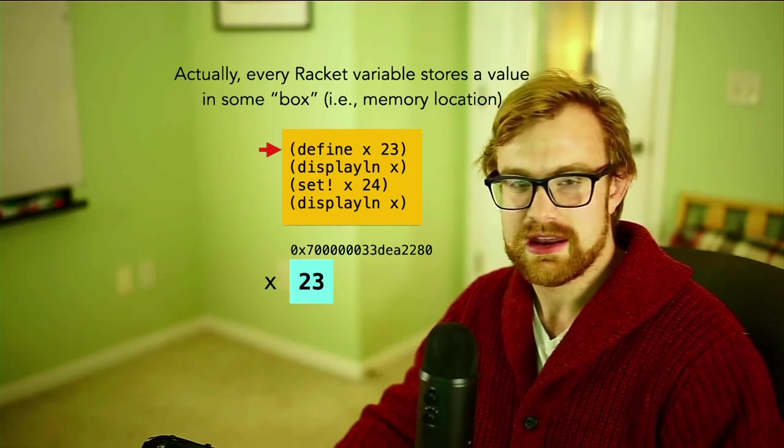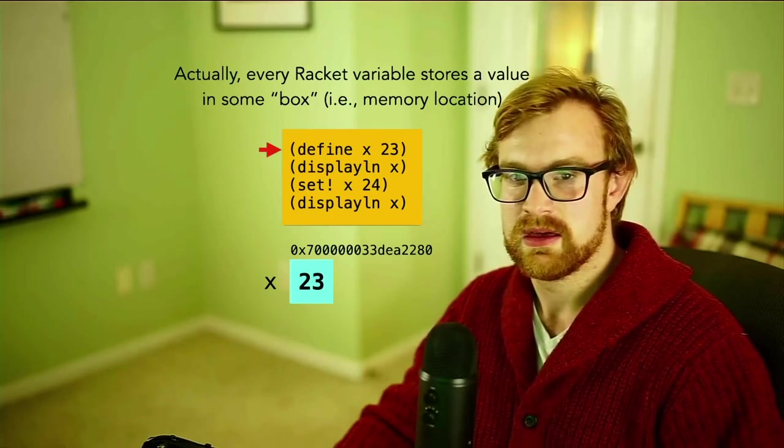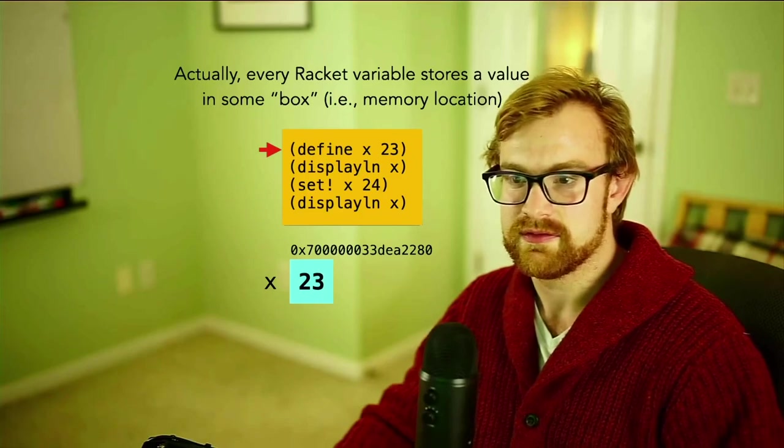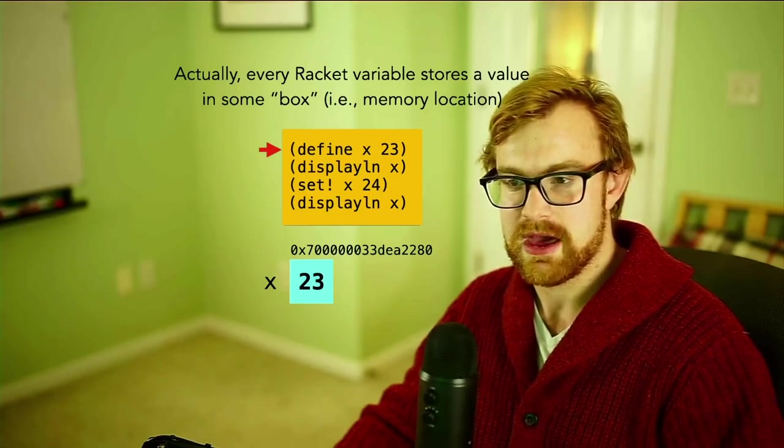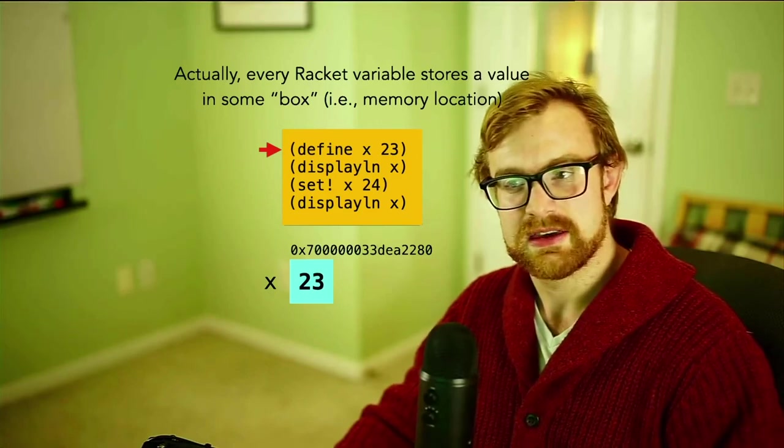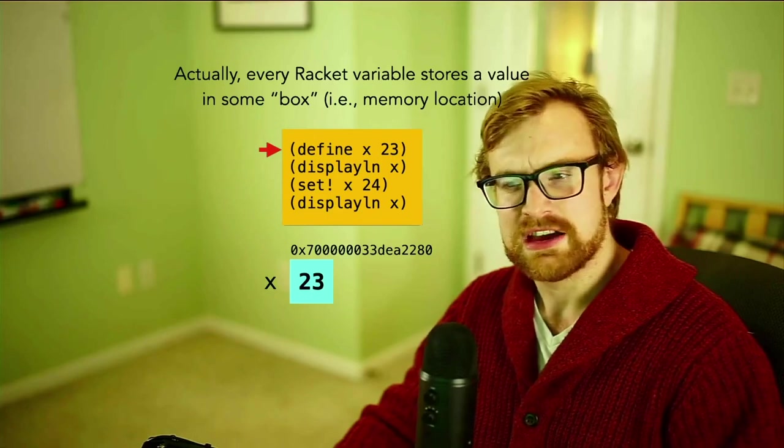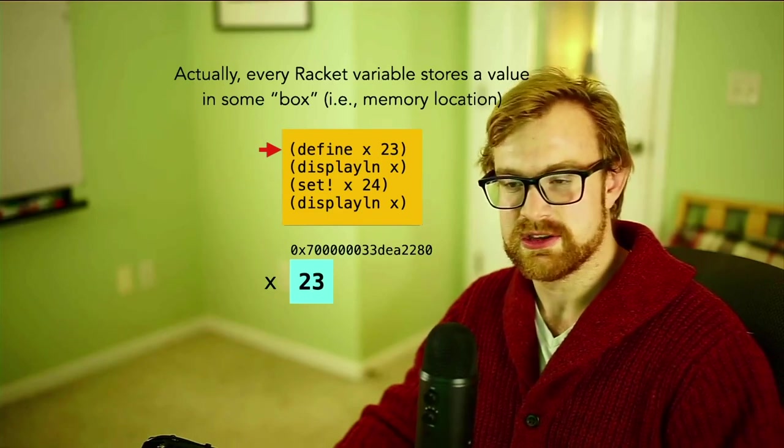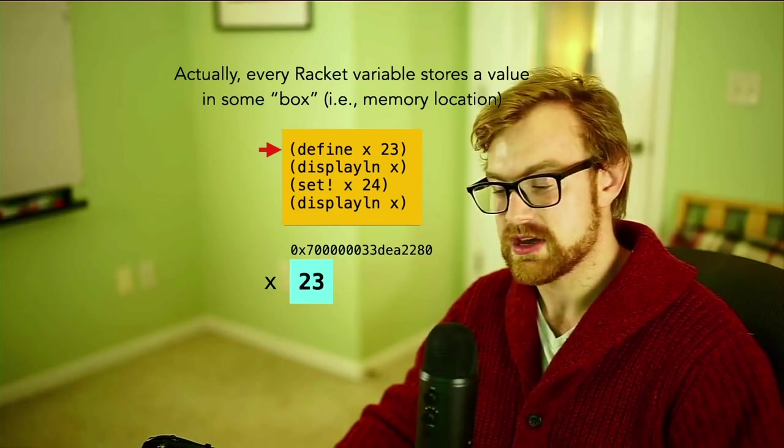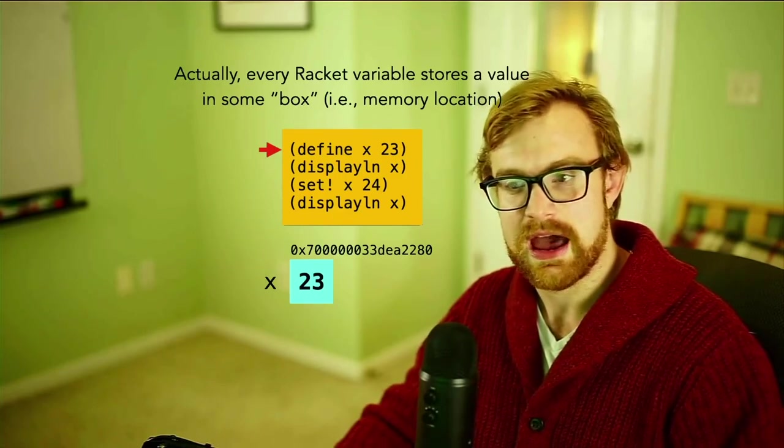So let's look at how this piece of code executes. I've defined X as 23 and then I do a displayln of X and then I set-bang X to be 24 and then I display X again. Now if X is immutable, I should expect that the two displaylns will return the same thing because of course X is only declared once. How could it ever change?